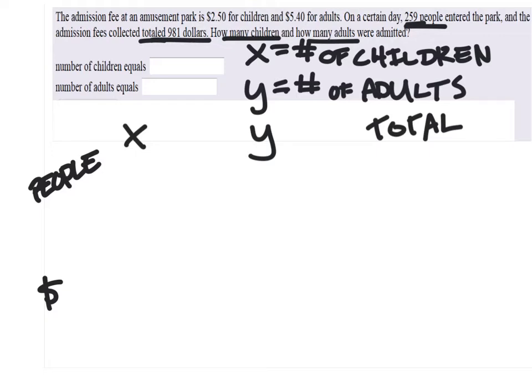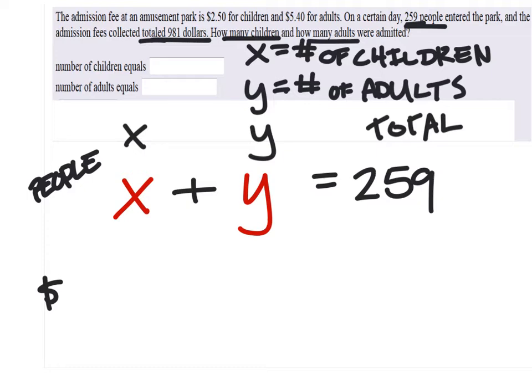So people, in terms of people, the X column represents children. How many children entered the park? We don't know the exact value, but we have defined it as X. And how many adults entered the park? Y number of adults. X plus Y. If we add these two together, then we get the total, which it told us was 259. Well, that's just the equation for number of people. That doesn't account for the cost, but we're going to.